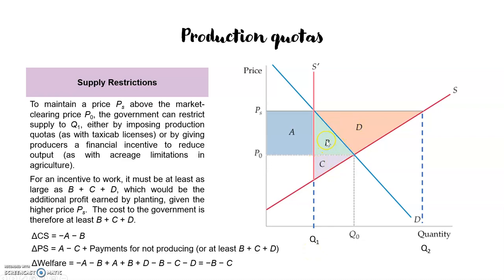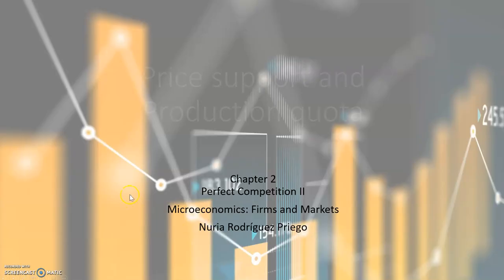The cost to the government is only b + c + d. The change in welfare is: change in consumer surplus plus change in producer surplus plus cost to government, which equals (−a − b) + (a + b + d) + (−b − c − d). At the end we have minus b minus c. So the deadweight loss is minus b minus c. That's all for now — see you in the next video.